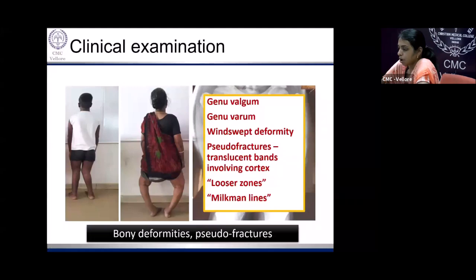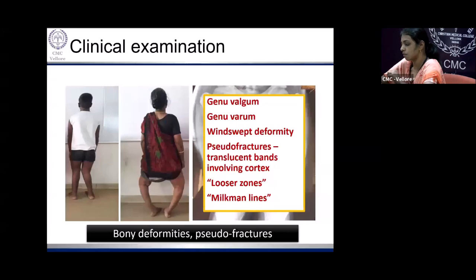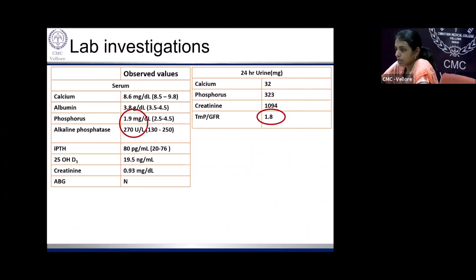On clinical and radiological examination, there was a genu valgum deformity. When there is varum on one side and valgum on the other, that is known as a windswept deformity. Pseudo fractures, also known as Looser zones or Milkman's lines, were seen on x-rays — these are the hallmarks of osteomalacia. Biochemically, the fasting phosphorus was low in the boy, the alkaline phosphatase was high, and we also assessed TmP/GFR — the renal threshold for phosphate reabsorption, which normally should be around 2.5 to 4.5.